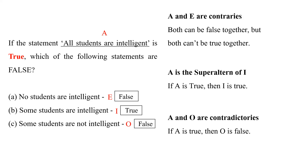So let's look at our question again and find the relationship between A and the letters E, I, and O. Remember, A and E are contraries — we know that both statements can be false together, but both can't be true together. So since A is true, E cannot be true too. Therefore, E is false. Next, A is the superaltern of I, which means if A is true, then A's subaltern I is also true.